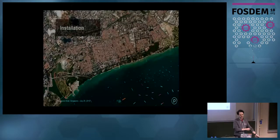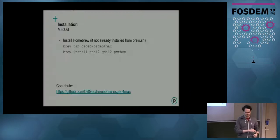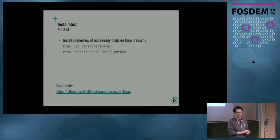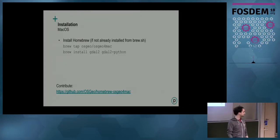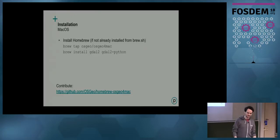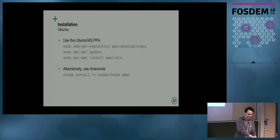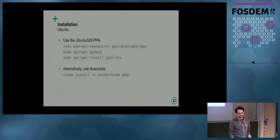On the installation side, on Mac it's pretty easy. If you use Homebrew — which you should — there's the OSGEO for Mac tap that you can use. It's also managed by OSGEO, and they're always looking for some help there. You just install the GDAL 2 and GDAL 2 Python bindings. On Ubuntu, there's the Ubuntu GIS PPA that has GDAL. There's also a cross-platform way: if you're already using Anaconda, you basically just install GDAL and that sets up a lot of the dependencies you need.